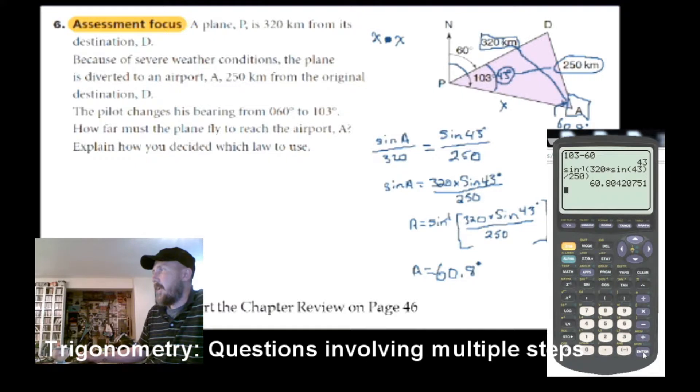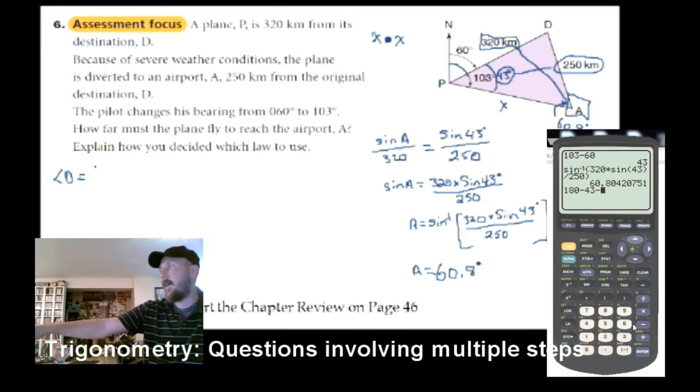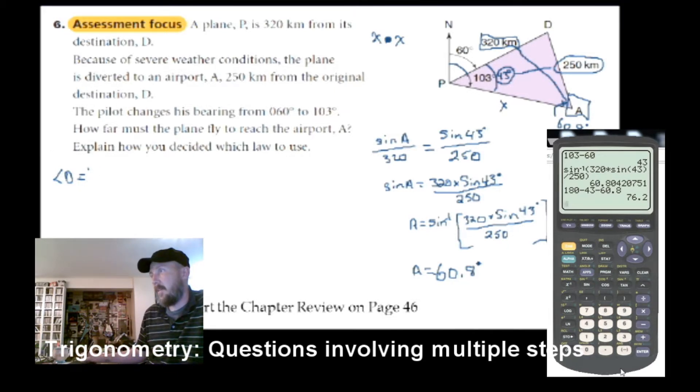So now we can do another sine law. Angle D. Let's come over here. I've just got to make sure I've got room. Angle D is equal to, when we're figuring out angle D, we know the other two. We know that in a triangle, it has to add up to 180 degrees. So I'm going to do 180 minus that 43 minus, so the 43 from the triangle angle P, the angle that we just found, 60.8. That means that angle is 76.2. So angle D is 76.2 degrees up here.